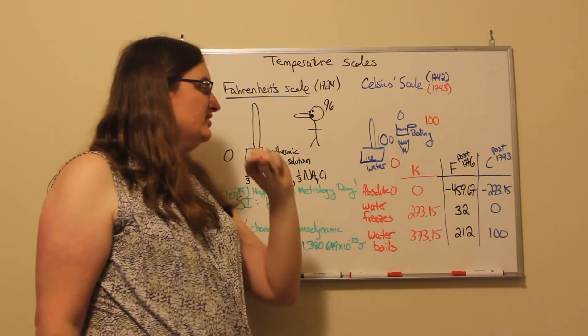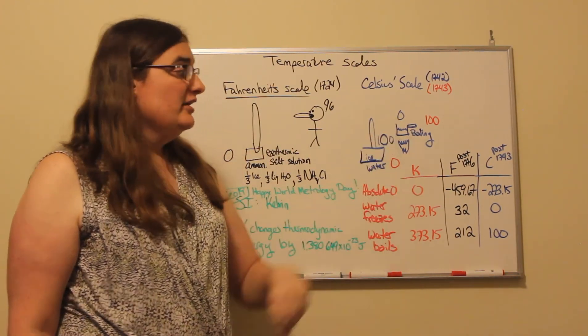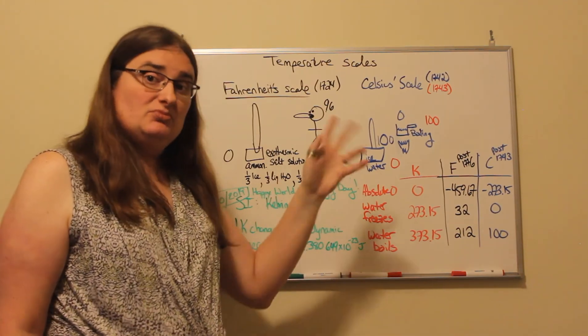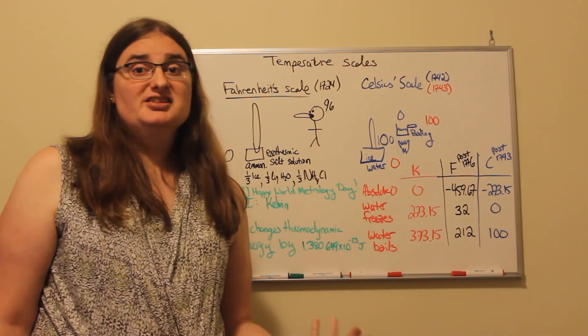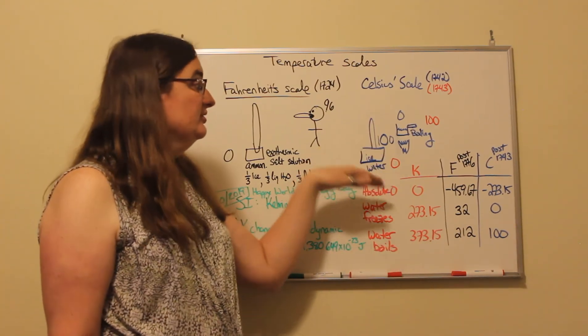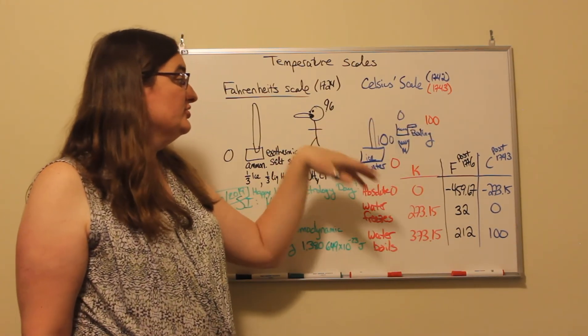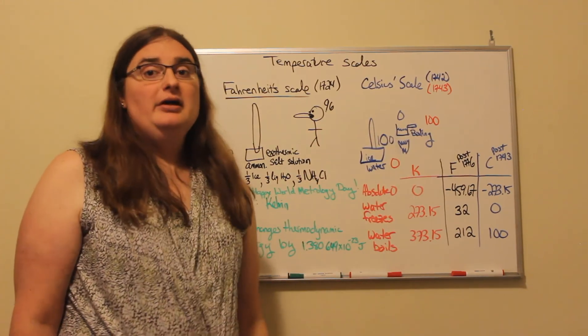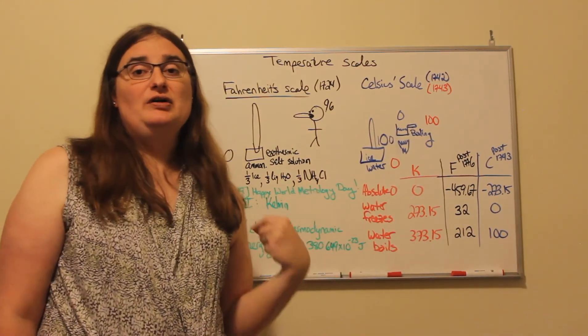So let's make zero freezing water and 100 boiling water. The standard was originally called centigrade for 100 marks in between zero and 100—freezing water, boiling water. And that's how that standard evolved today.